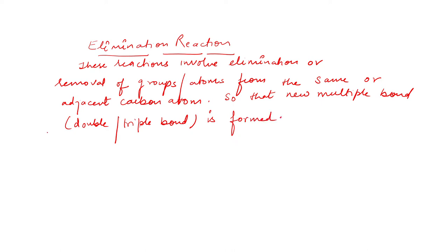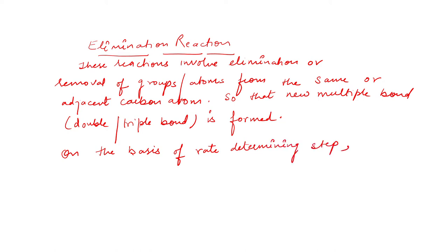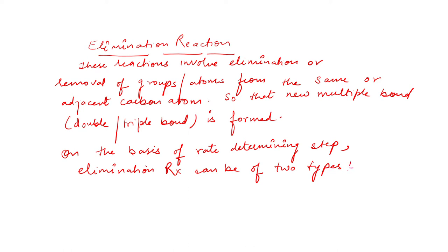Then, on the basis of the rate-determining step — just like we studied in substitution — on the basis of the rate-determining step, which is the slow step, elimination reaction can be of two types.